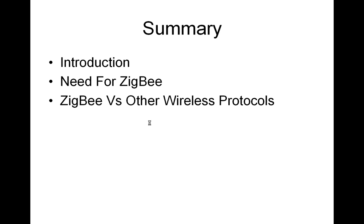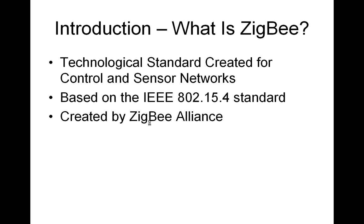First, let us look into the history of Zigbee technology and the necessity for evolution of this standard. Zigbee is a technological specification for a suite of high-level communication protocols using small, low-power digital radios based on the IEEE 802.15.4 standard for low-rate wireless personal area networks. The technology defined by the Zigbee Alliance is intended to be simpler and less expensive than other WPANs. Zigbee is a low-cost, low-power, wireless mesh networking standard.